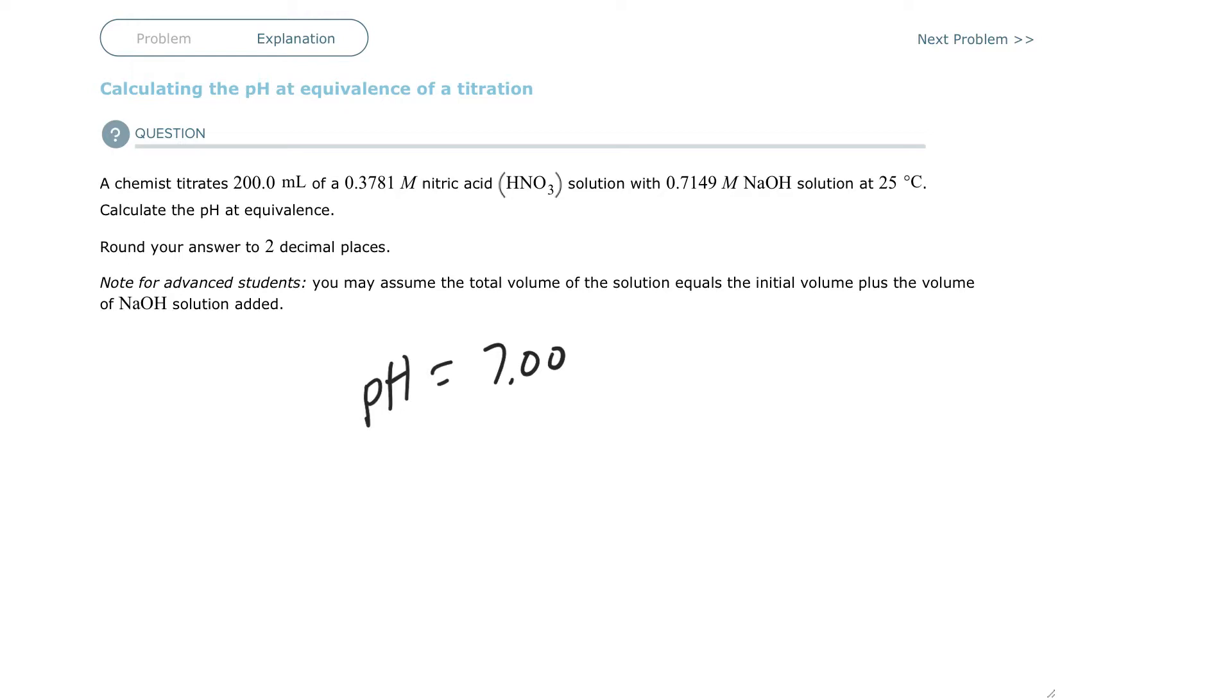If you know something is going to be less than seven, you don't want to use something at seven. You want to use something lower than seven. And if you know that you're heading to a pH higher than seven, you want to choose one that would change at a little bit of a higher pH.